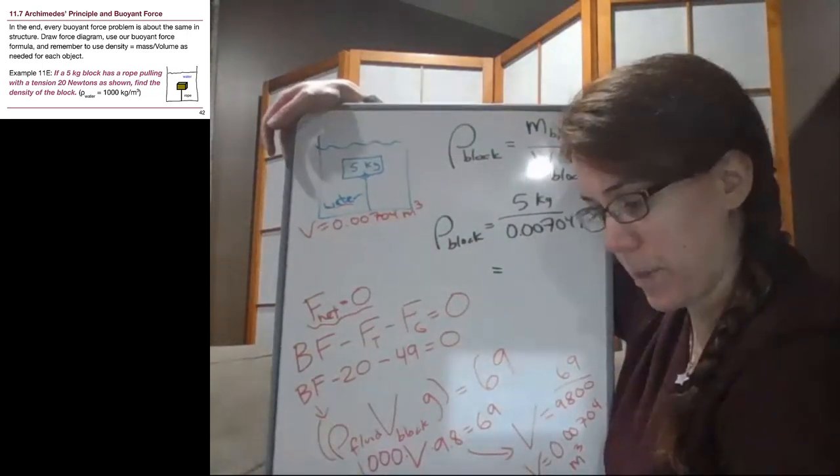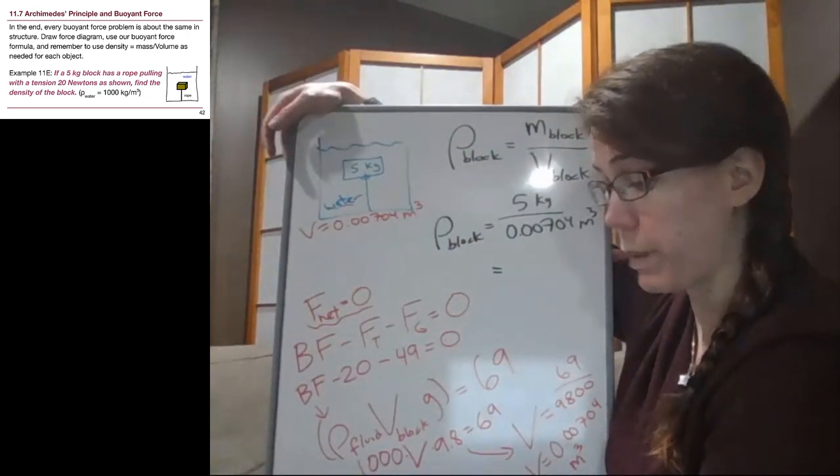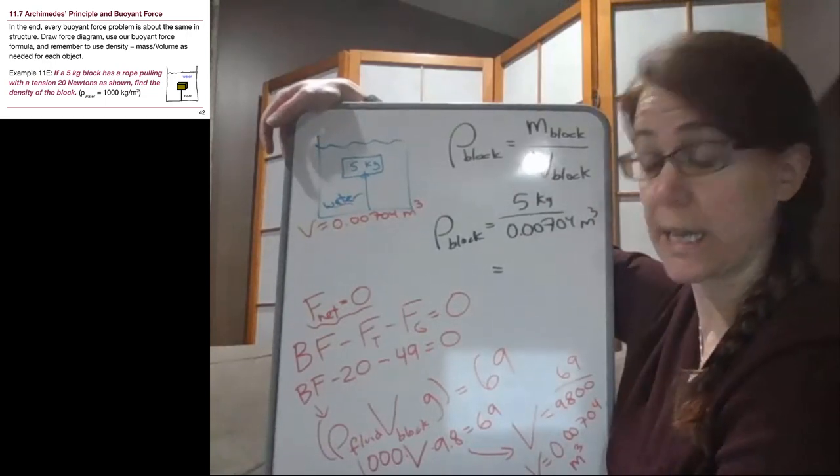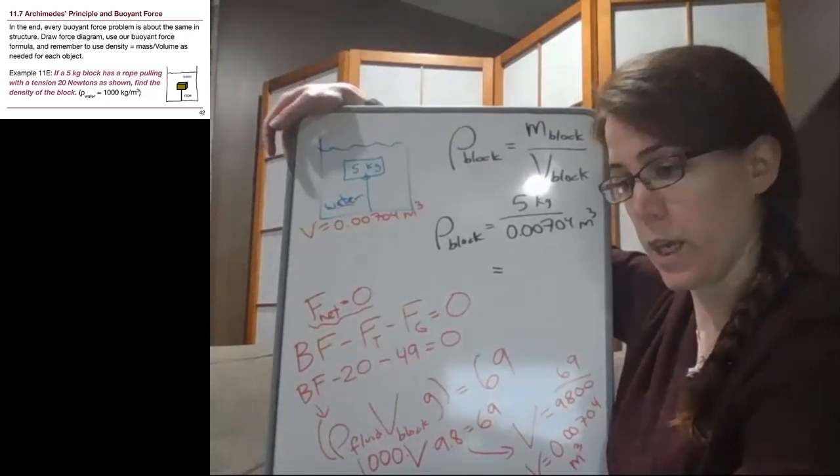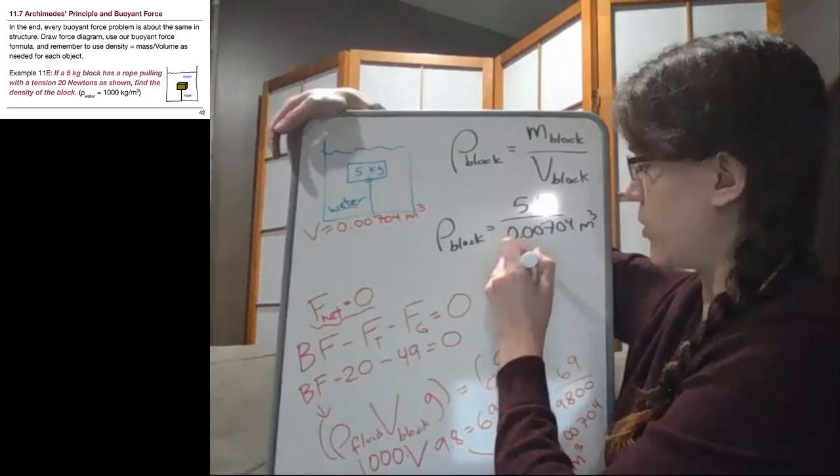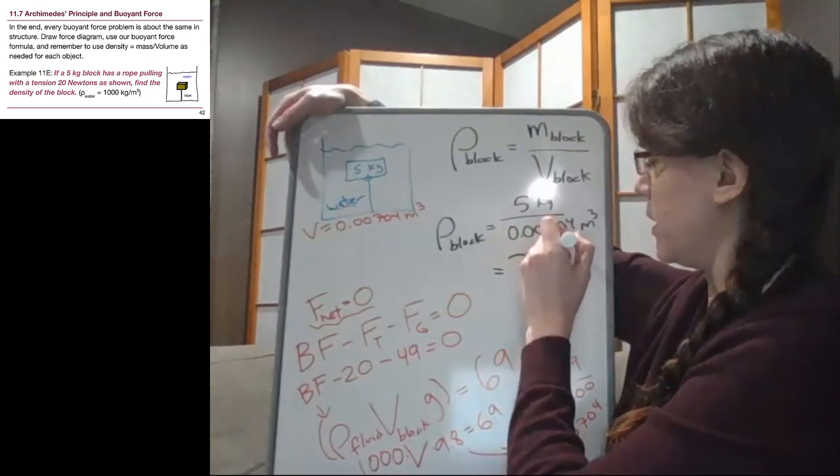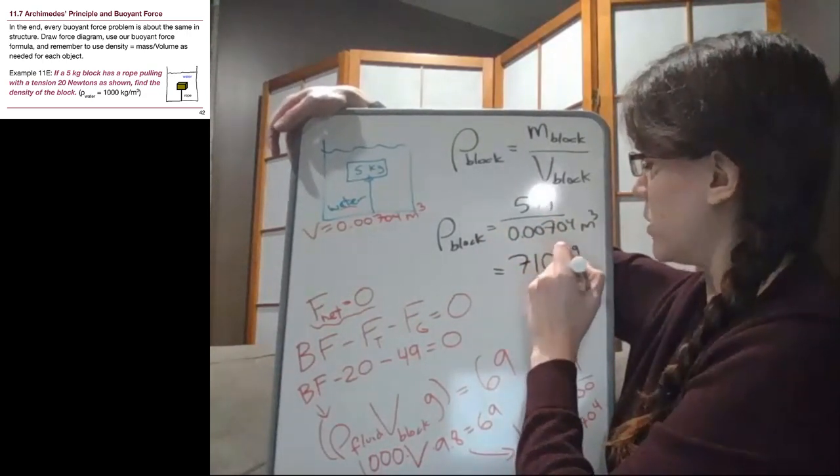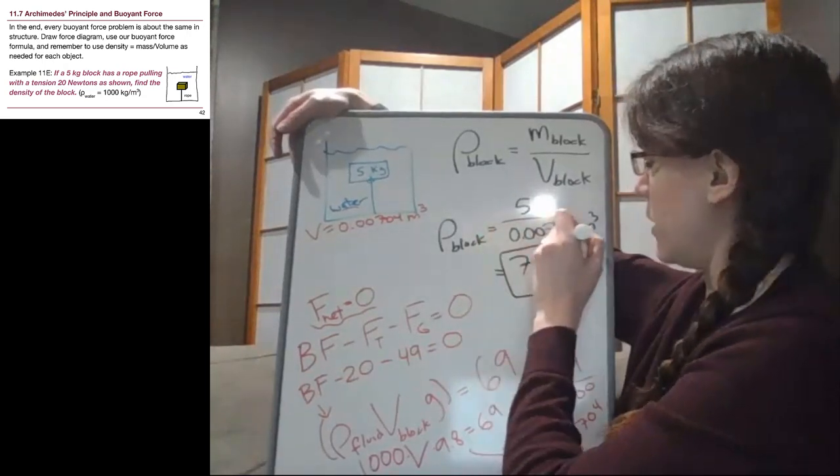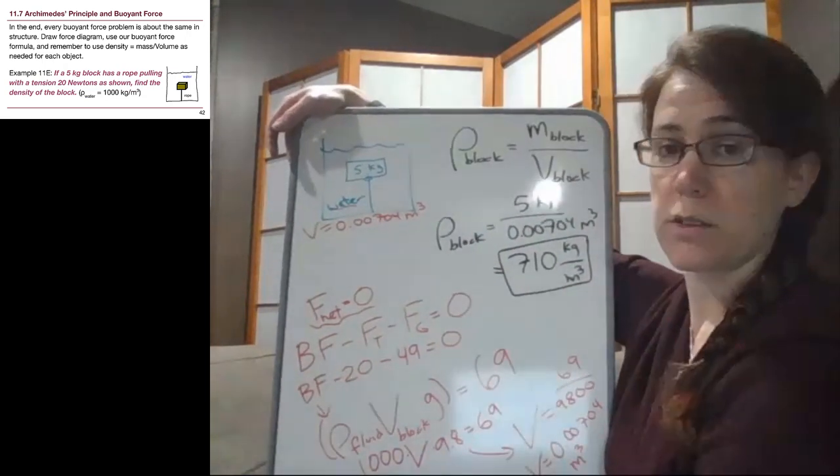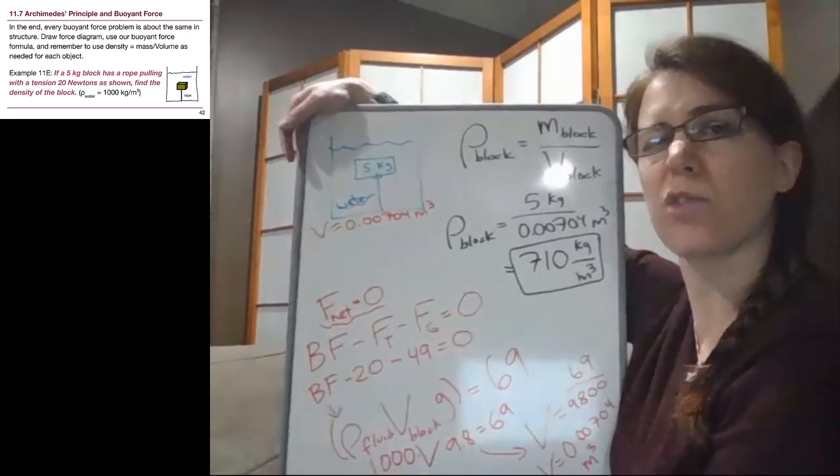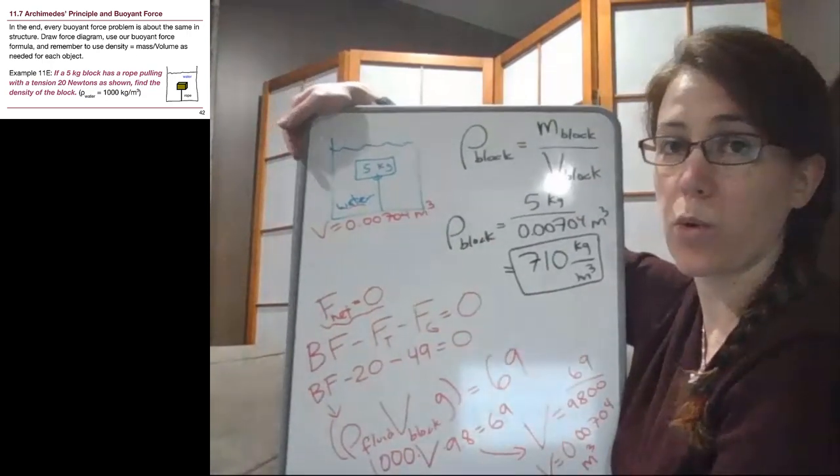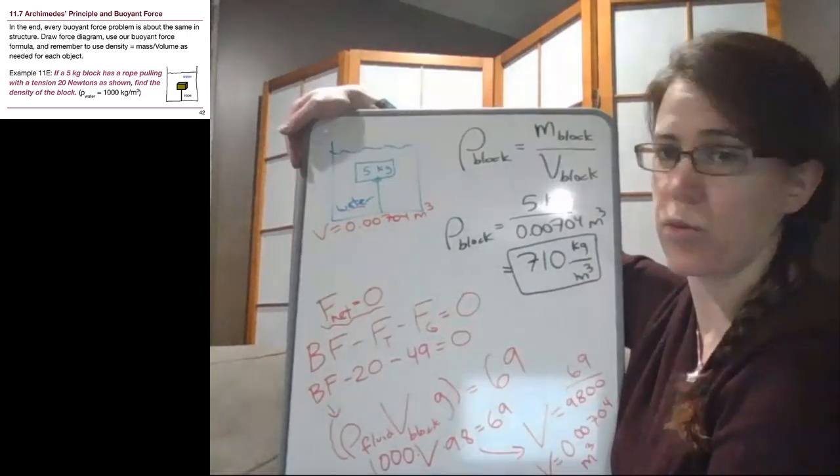And remember, even before we type it into our calculators, we were expecting this number to come out to be less than that of water. And we end up with 710 kilograms per cubic meter. So that is an entirely reasonable density for us. It is roughly the same order of magnitude as the density of water.